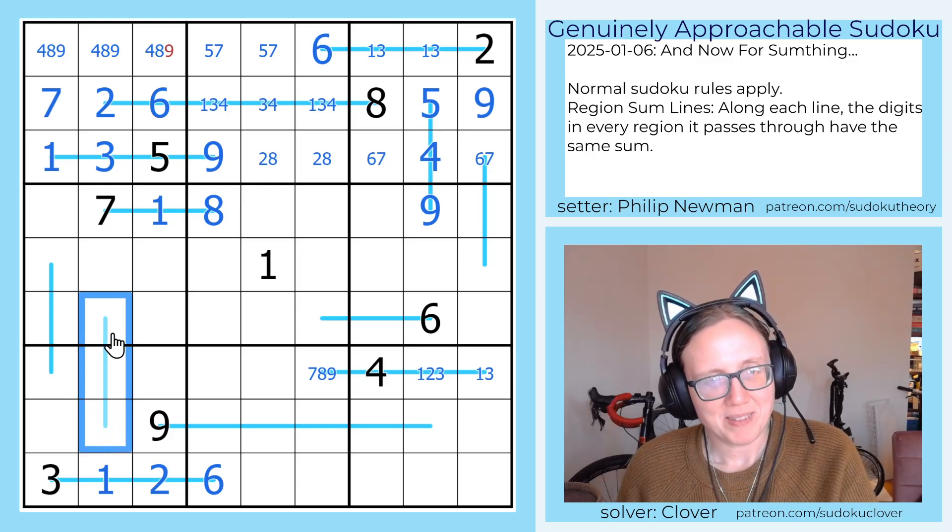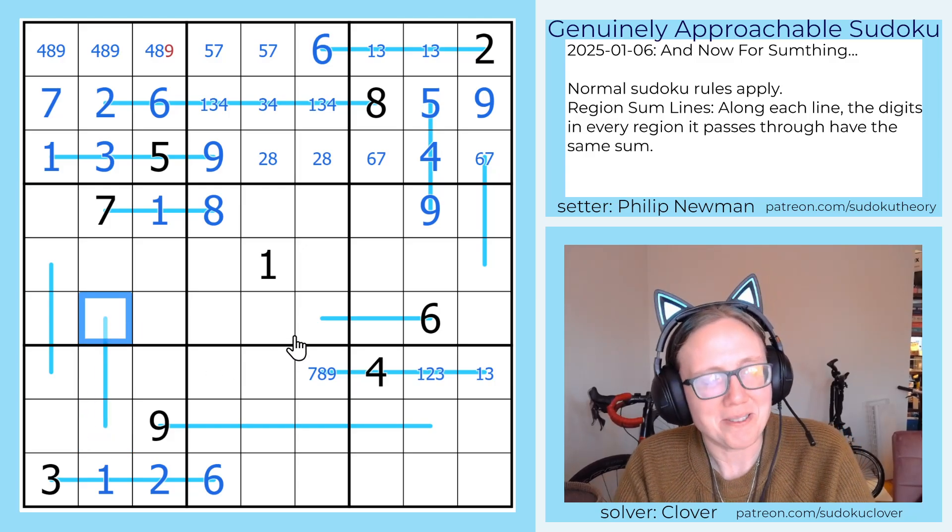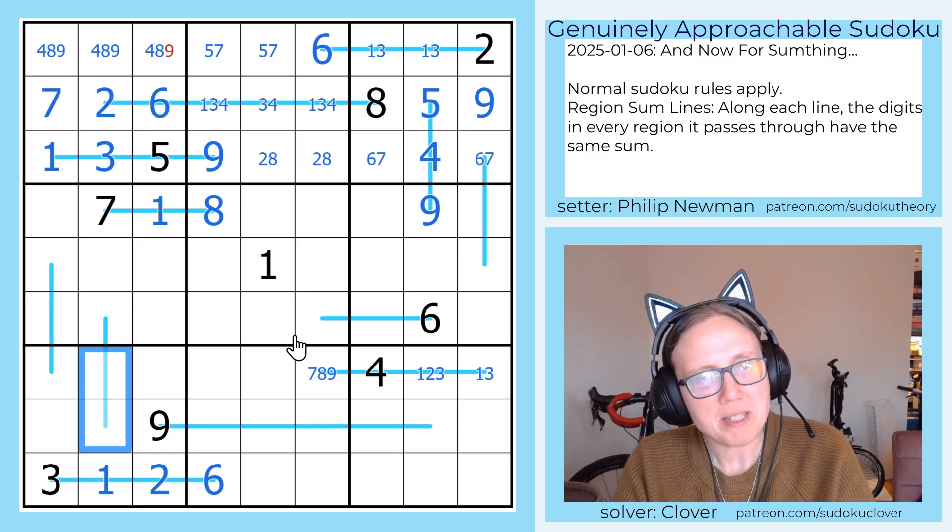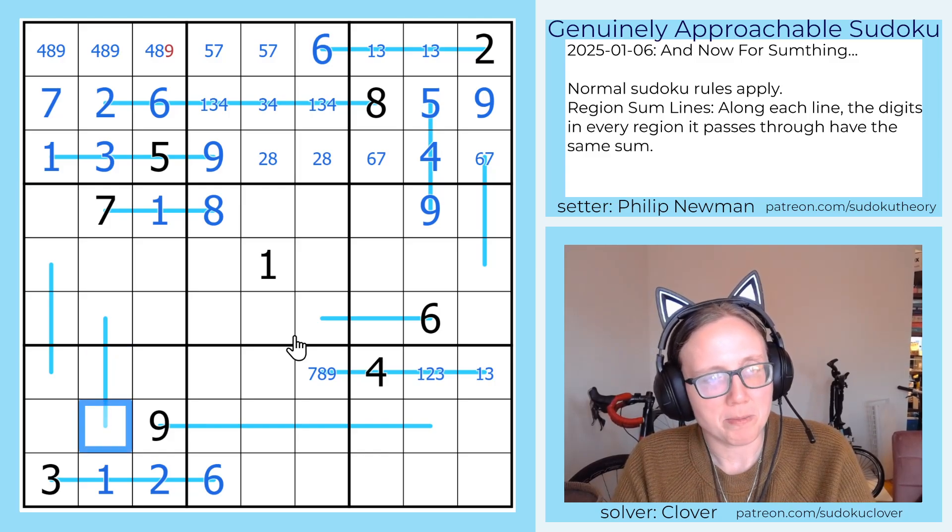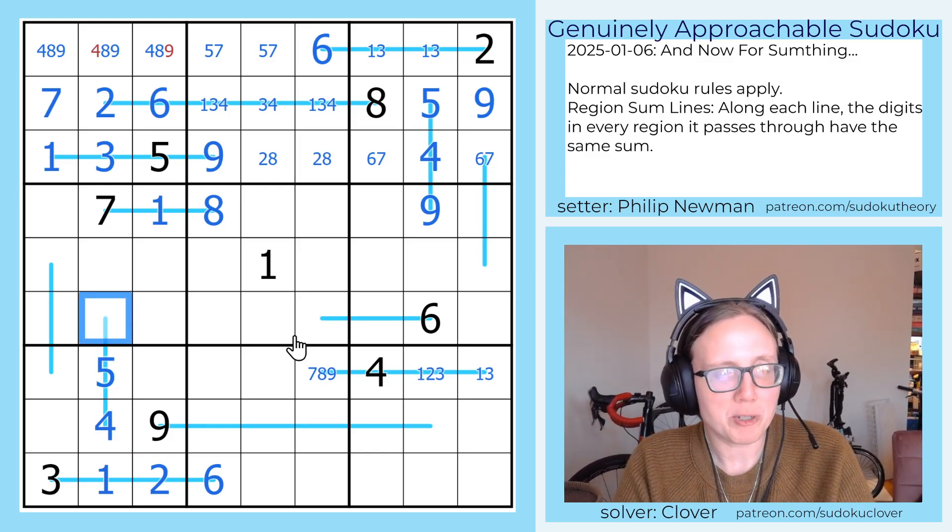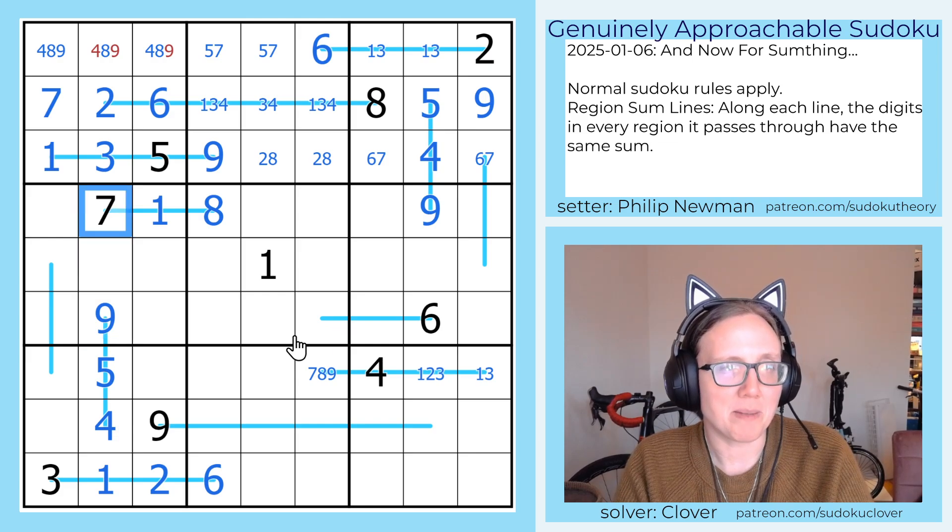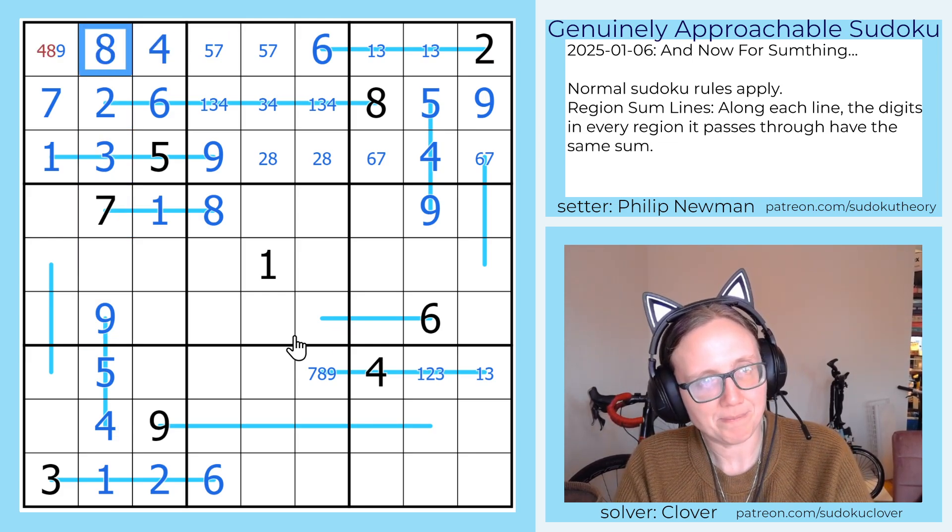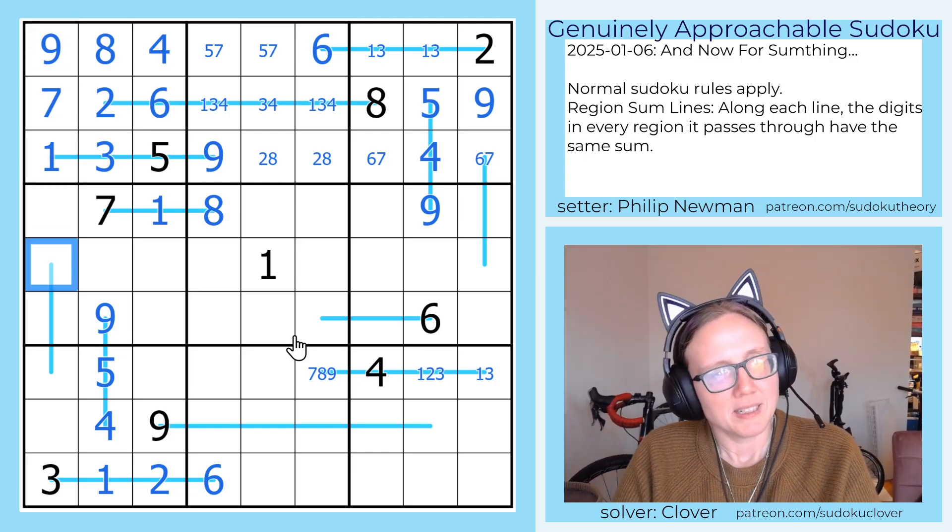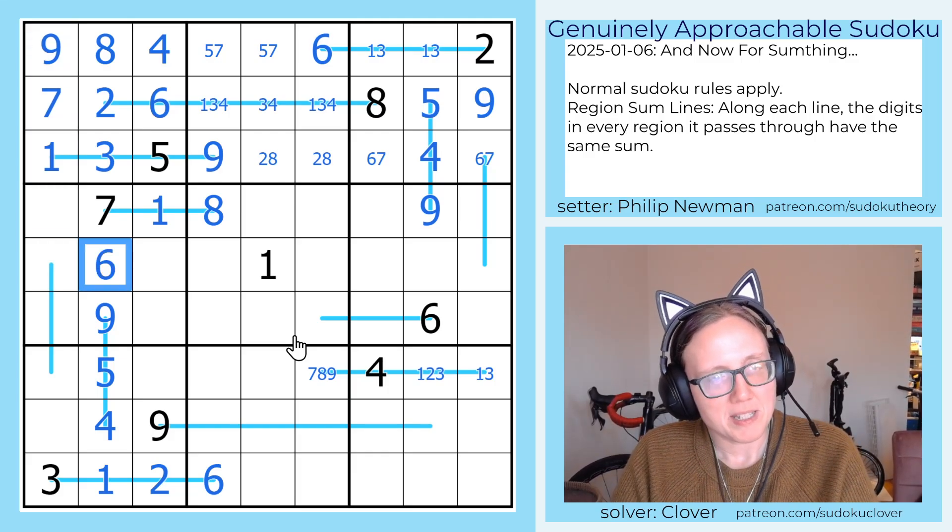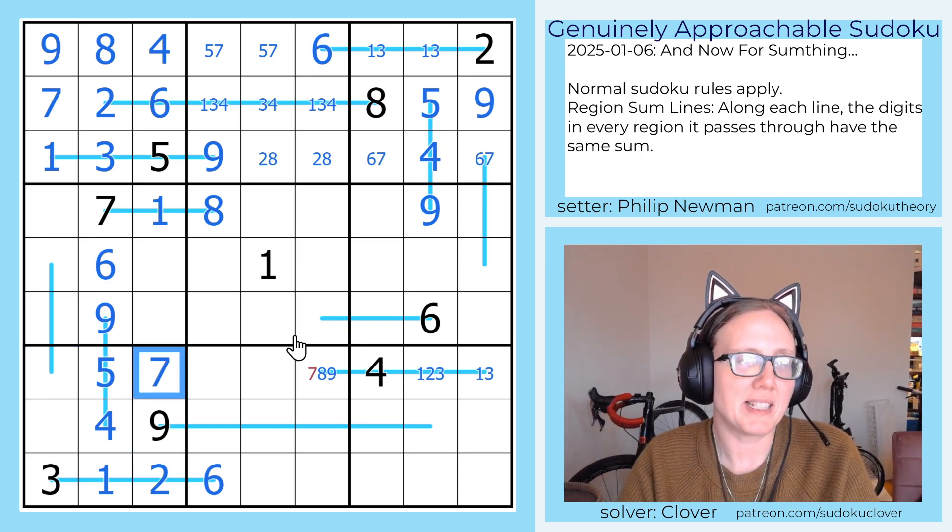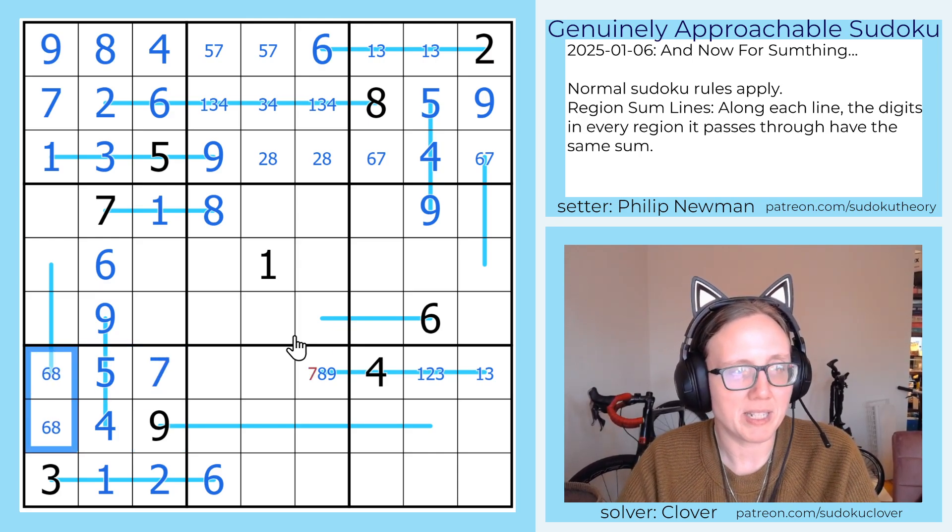Now if we look at this line, this is a classic arrow sudoku trick being repurposed in this region sum line sudoku. The absolute smallest these two numbers could possibly be is 4 and 5, which sums to the absolute biggest sum they can possibly have, which is 9. So then we know that that is correct. Now we can place a 6 here to finish off this column. These need to be 6, 7, and 8, and then the 7 in region 1 places a 7 there.